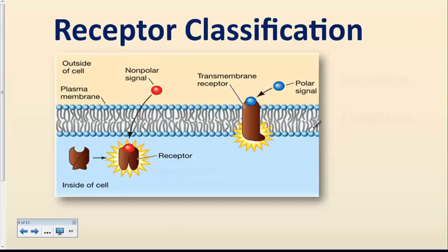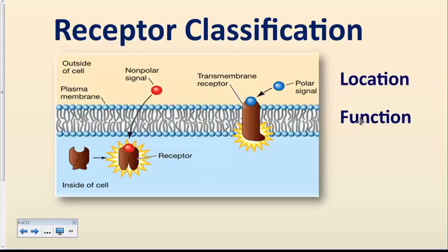Chemical signals have three types of receptors, and there are a whole variety of them. They can be classified based on their location within the cell or based on their function. We are going to focus the discussion on the classification of receptors based on location — meaning where those receptors are located on the target cells. In that respect, we have two types.